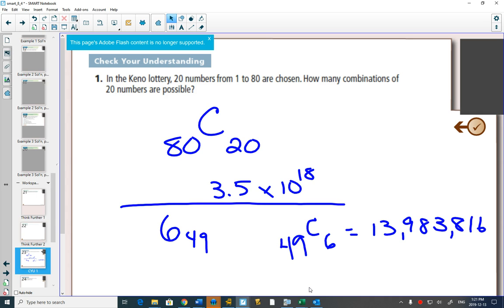Well, at $2 a ticket, you could buy every single possibility. You want to win Lotto 649? You just have to buy 13,983,816 tickets. At $2 a ticket, that costs you a mere $28 million.